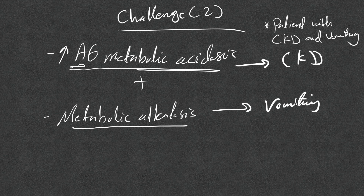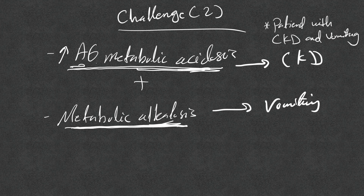This is a clear example that acidosis and alkalosis can coexist — but only high anion gap metabolic acidosis can coexist with metabolic alkalosis. Metabolic alkalosis cannot coexist with normal anion gap metabolic acidosis, because both involve bicarb loss or gain. If two processes cause net gain and net loss, the net result determines whether you get alkalosis or acidosis.